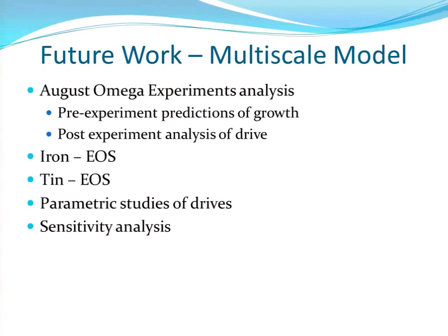For the multiscale model, for the August experiments we're hoping to actually get some pre-experiment predictions rather than just post-analysis, and then use that to help determine what drives to use at Omega. We're working on improving the iron model — it's always improving — and potentially getting tin in there as well. What I'll be doing this summer is a parametric study of drives and a sensitivity analysis to see what components of the model are really affecting the growth of the ripples.